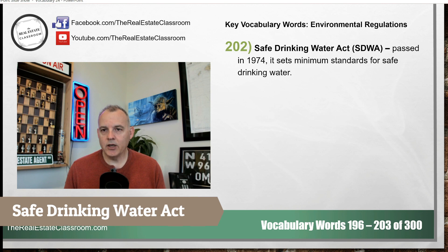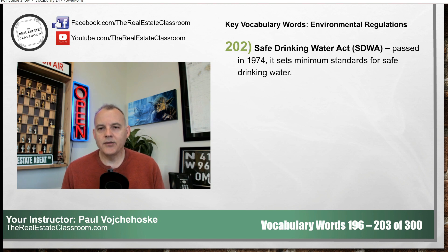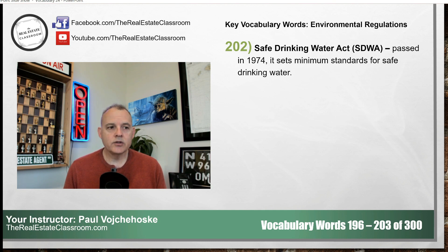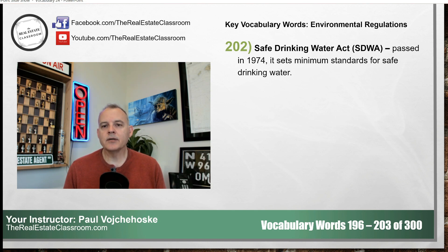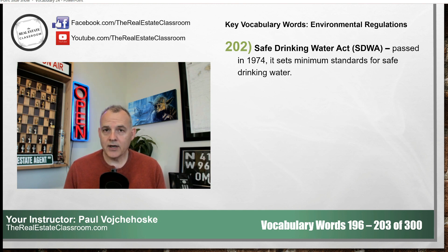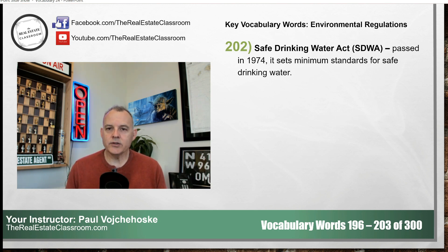Number 202, the Safe Drinking Water Act. This is the actual law that does deal with clean water. This law establishes the minimum standards for safe drinking water. Your public utility that provides the water that comes out of the faucet has to comply with minimum standards established by the Safe Drinking Water Act. It also provides standards and methods for that utility to purify water from underground wells or rivers, and provides the same minimum standards for well water as well. It's the Safe Drinking Water Act — not the Clean Water Act — that provides those minimum standards.